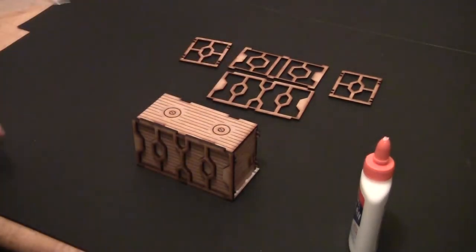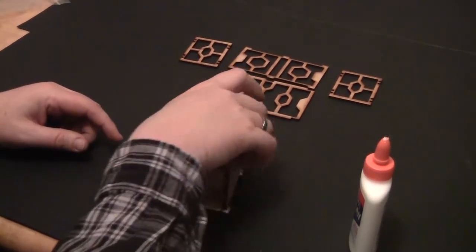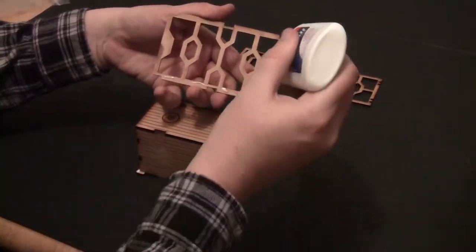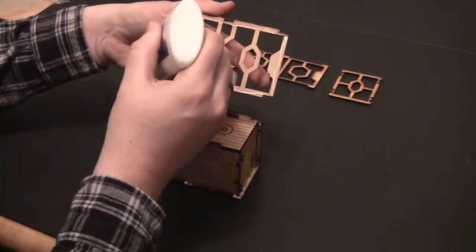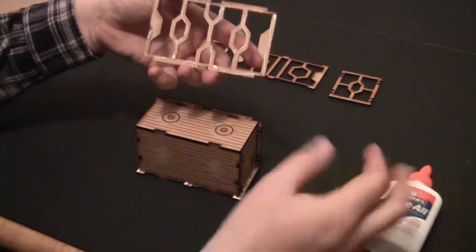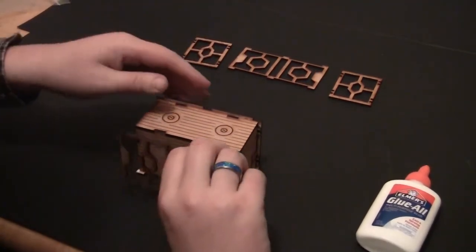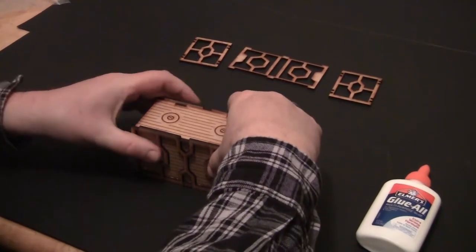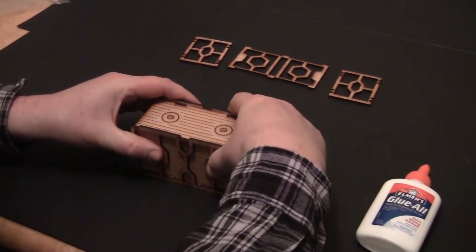So that'll just go on there, like that. Go ahead and do the other side. And yeah, I like Elmer's. It's easy. It's cheap. It seems to interface well with MDF. I've had no problems with anything coming apart afterwards.